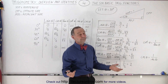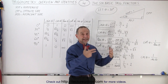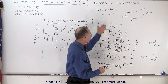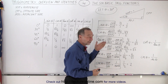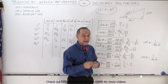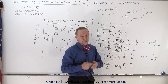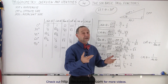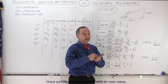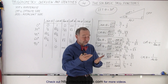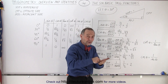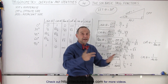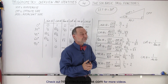People have calculated these values for all the various different angles and put those in a table. Today with calculators, we just punch it in and it gives us the value. So you punch in 30 degrees, take the sine of that, and you get 0.5.